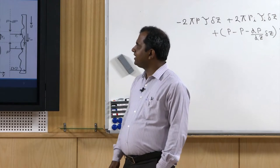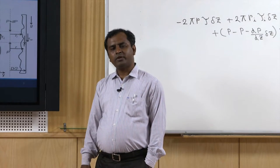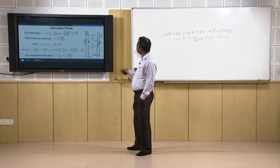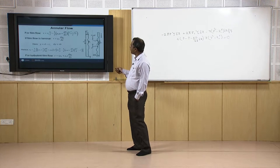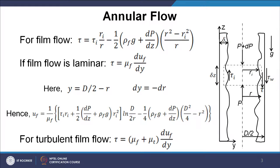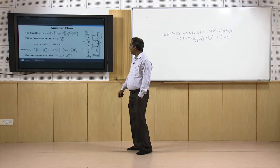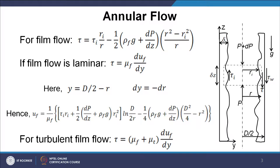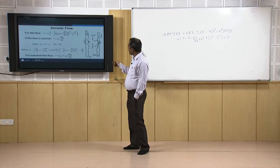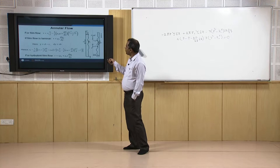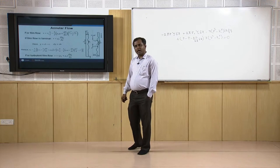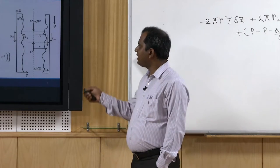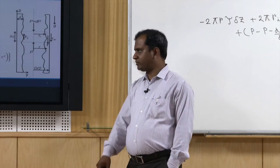Let us see how the annular flow configuration can be shown in a pictorial view. Here I have shown a pipe inside which annular flow is occurring. Inside this, we have a liquid film adhered with the wall and inside the core we have the gaseous phase. In the film, we can consider a small element where this element will be getting shear stress tau from the adjacent liquid layers, and at the interface it will be getting shear stress tau_i in the upward direction. Near the wall, this shear stress tau is converted to tau_w, which is the wall shear stress.